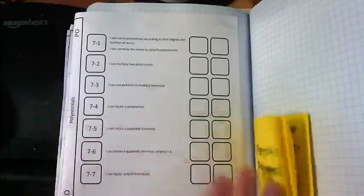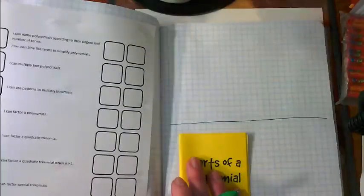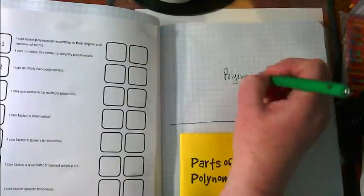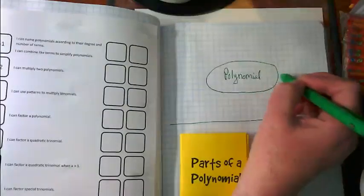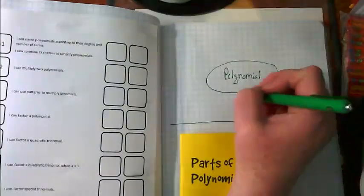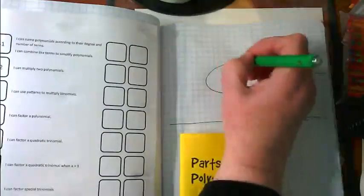In order to start working on polynomials, we need to have a definition of a polynomial. So that's what we're going to put at the top of this page. I'd like you to draw a line that kind of divides this page in half. We are going to put in the middle of this page the word polynomial, and around it we're going to make our own Frayer model for vocabulary.